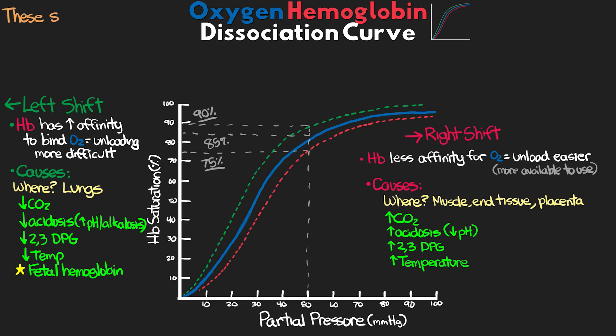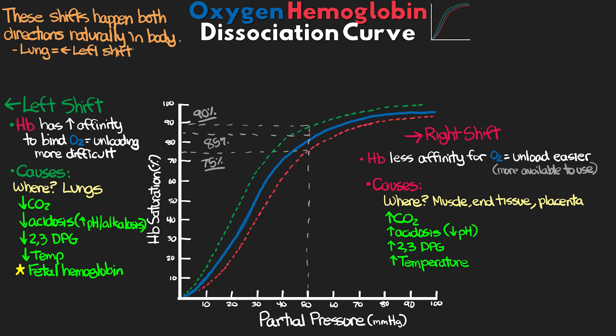Fetal hemoglobin has a much greater affinity for oxygen at lower partial pressures, creating a left shift — obviously favorable in the womb to pull as much oxygen to the baby as possible. These shifts actually happen in both directions normally in our body. In the lungs, where CO2 is low, pH is less acidic, metabolic activity is lower, and 2,3-DPG is less, we normally see a left shift. Then at the tissues, elevated CO2, decreased pH, increased temperatures, and elevated DPG levels produce a right shift, leading to more unloading of oxygen for cellular work.